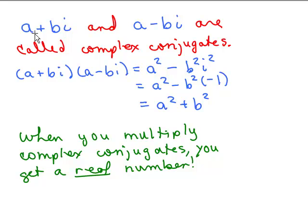So remember, a couple videos ago, we talked about complex conjugates. a plus bi and a minus bi are called complex conjugates, and when you multiply them together, we get a squared plus b squared. It ended up being a real number. So when you multiply complex conjugates, you get a real number.